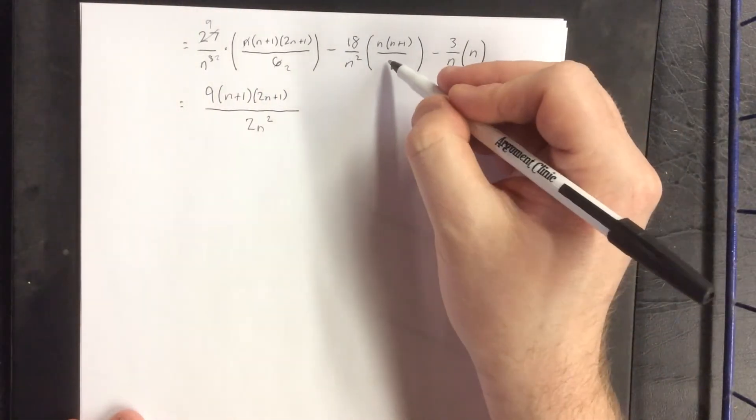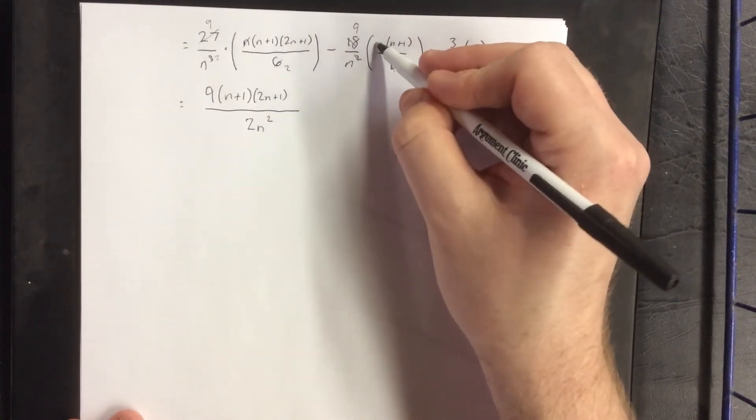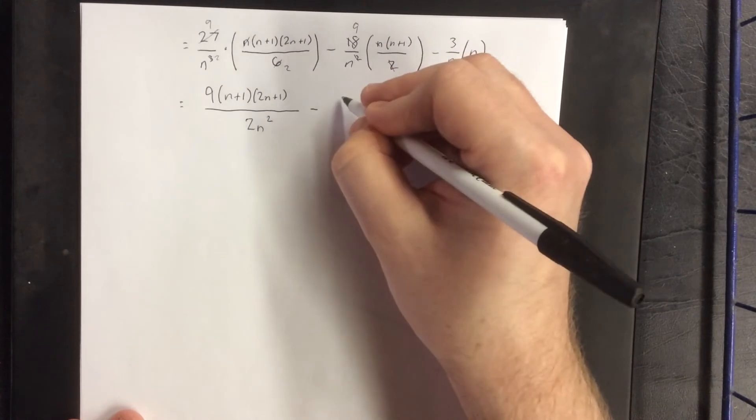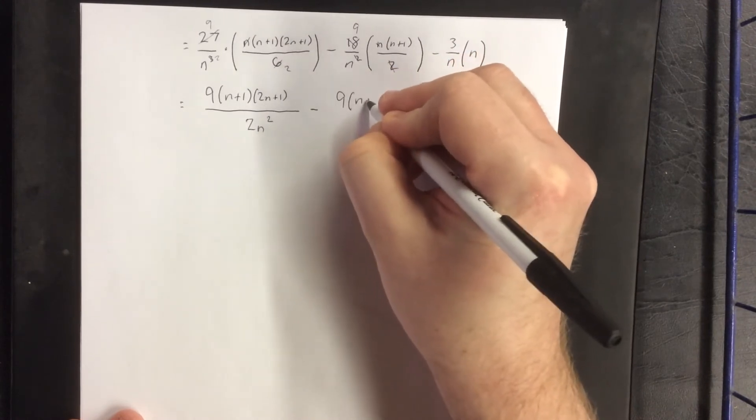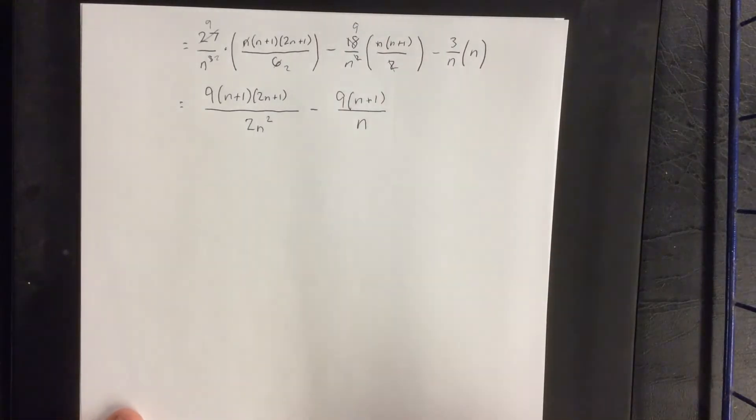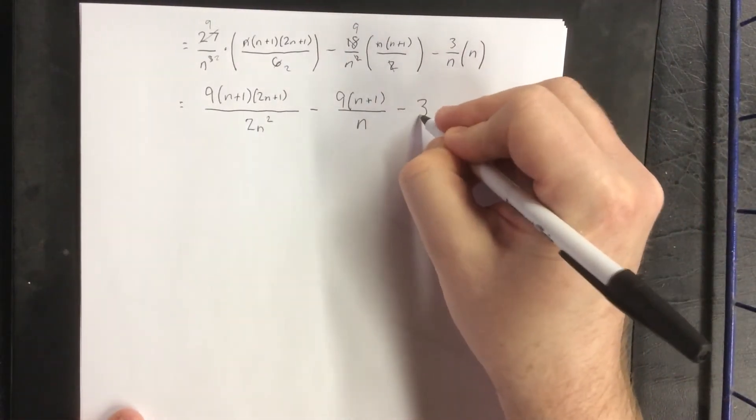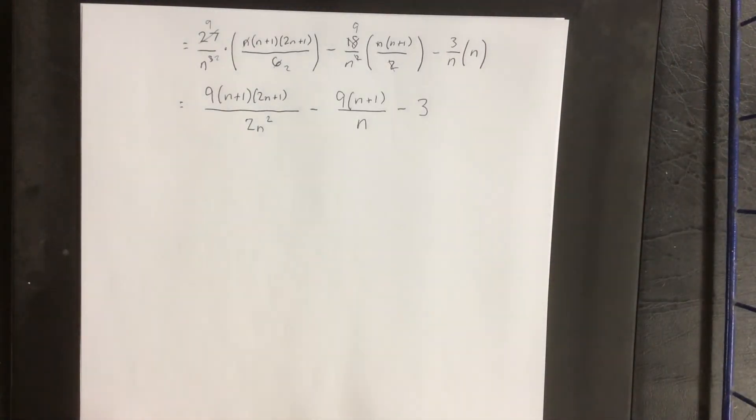On the next one, we can cancel the 2 with the 18, leaving us with a 9, and cancel an n with an n, leaving us with minus 9 times (n plus 1) all over n. And finally, an n and an n cancel out to leave me with minus 3.